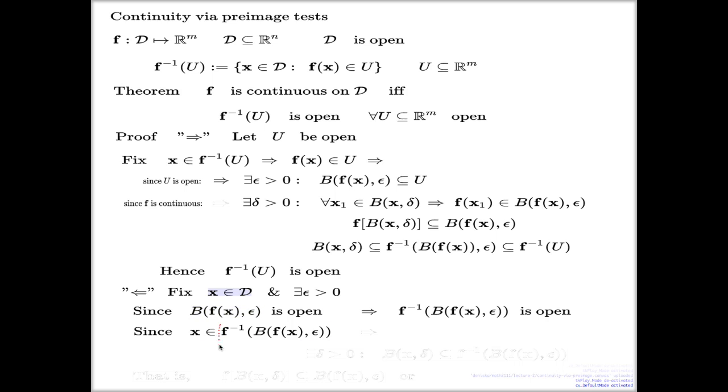And because this set is open, this x belongs to the set together with some ball around it. And that means there is a radius delta such that x belongs to the set together with the ball.